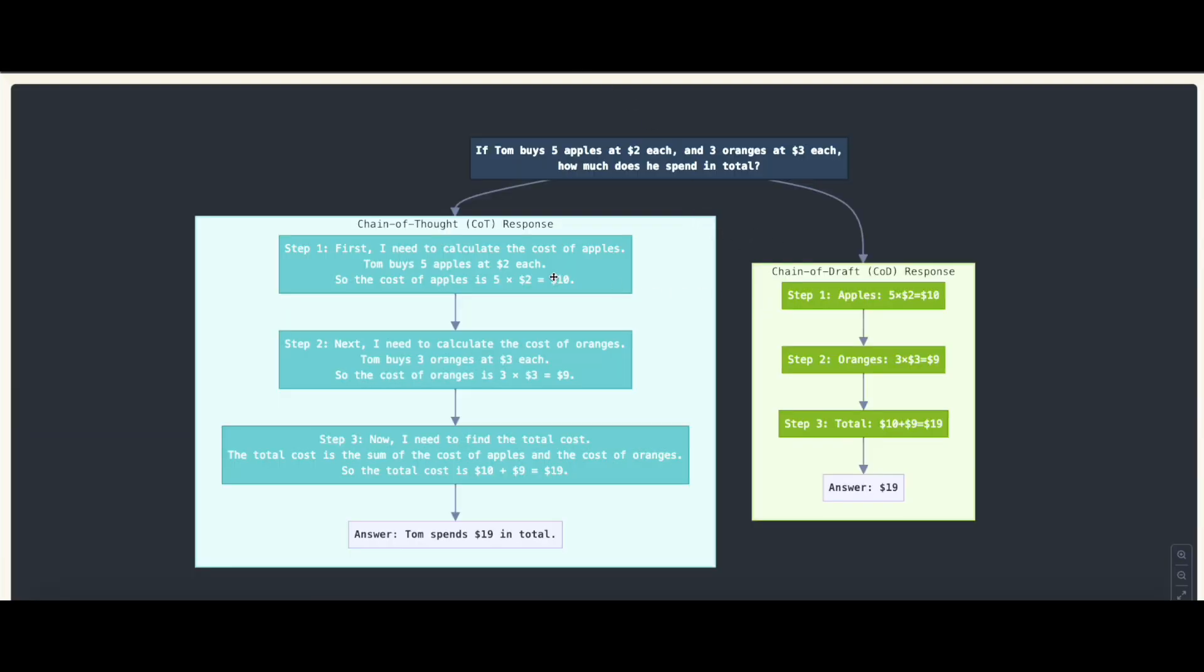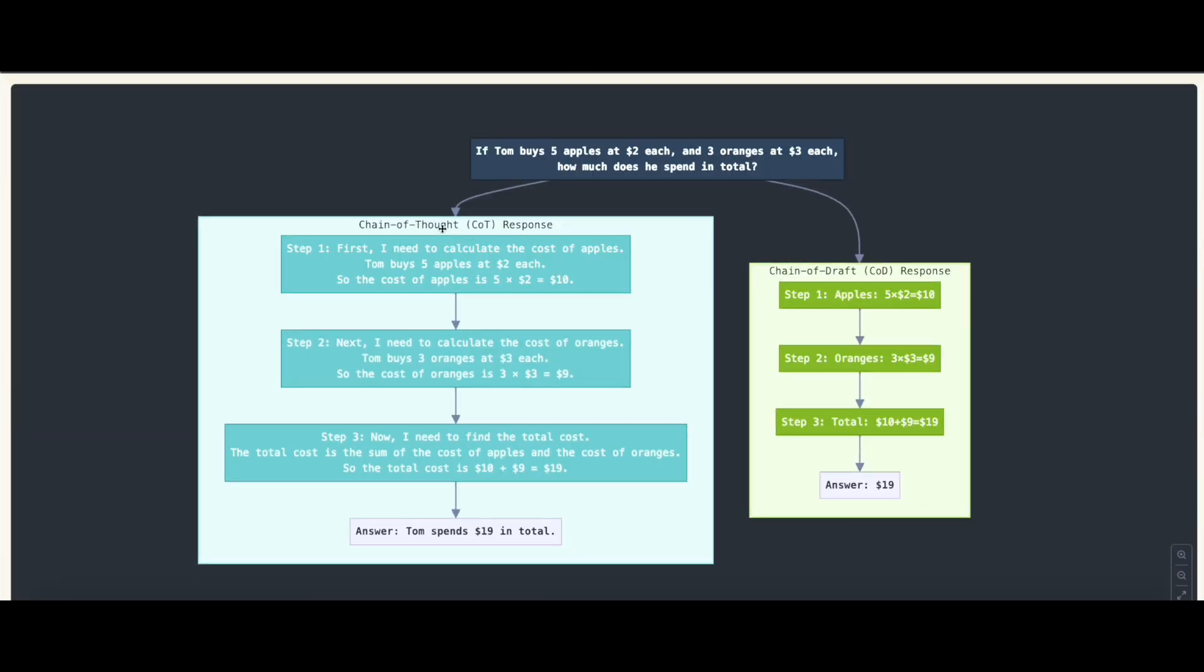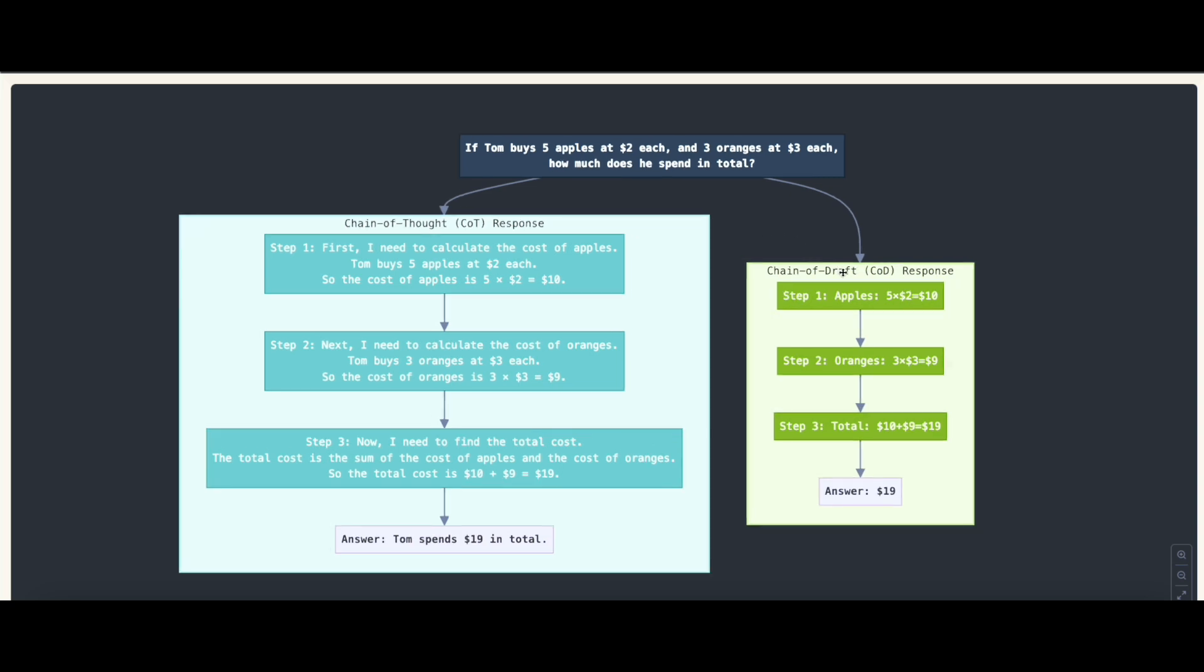Let me give you an example so we can compare Chain of Thought with Chain of Draft. Here's my question: If Tom buys five apples at two dollars each and three oranges at three dollars each, how much does he spend in total? The answer is obvious: five multiplied by two is ten, three multiplied by three is nine, and ten plus nine is 19.